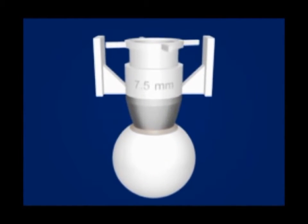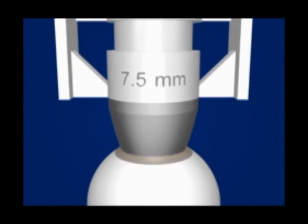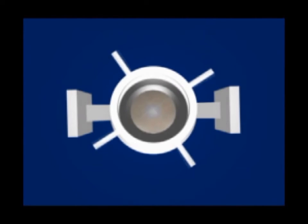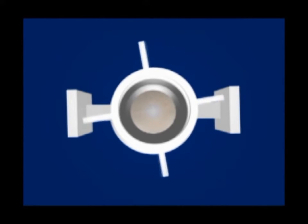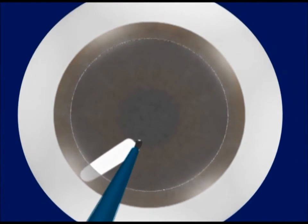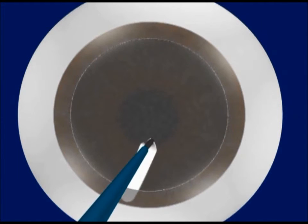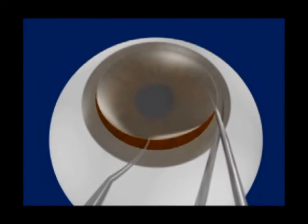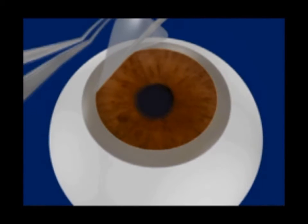Now we proceed to the creation of the complementary host surface. A partial-thickness trephination of seven point five millimeter diameter is done in the host, up to a depth of 300 microns. A lamellar pocket is created up to the limbus all around with the crescent blade. The anterior chamber is then entered and the host is cut full thickness and removed.